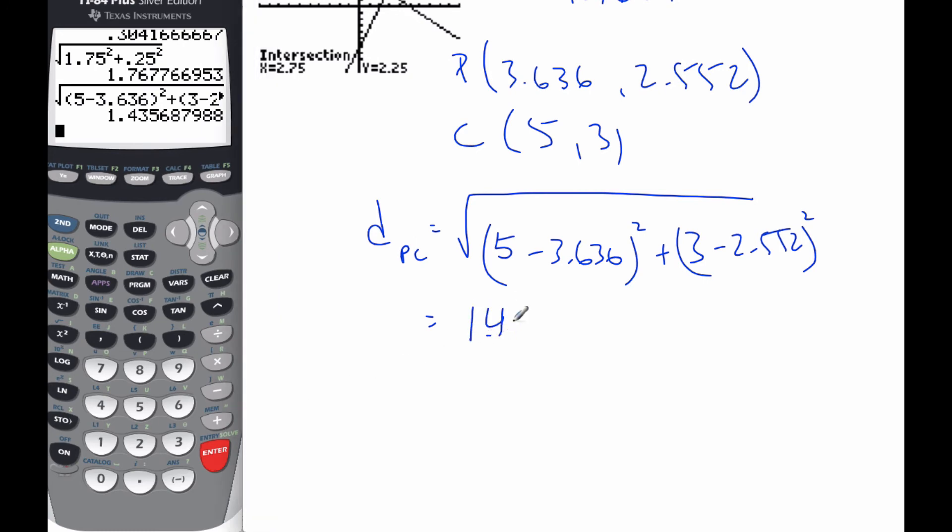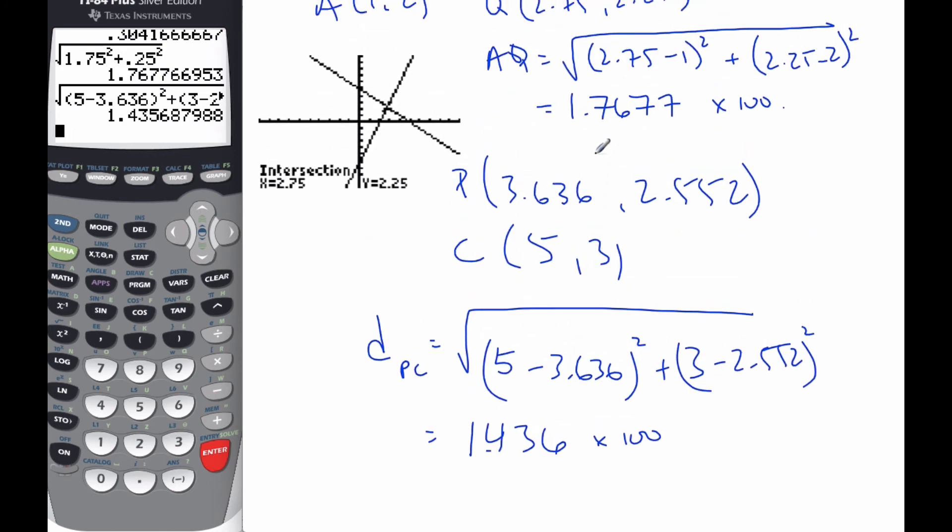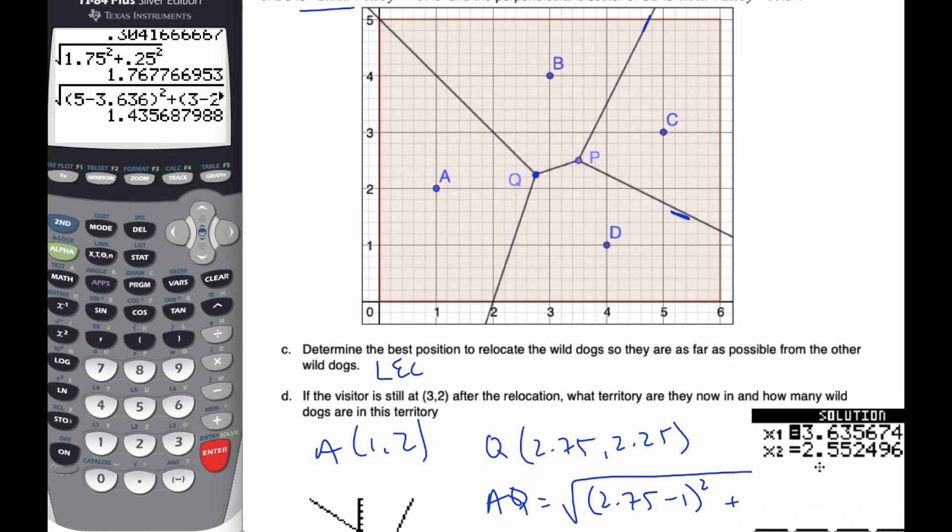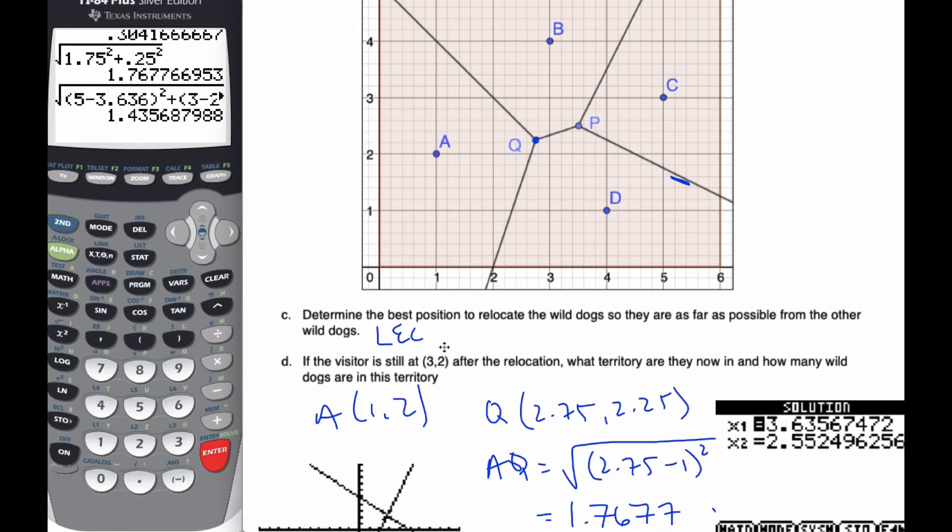My radius here is 1.436 times 100. And so it is clear that AQ, this is the larger circle. And so this is going to be the location of my new site for my wild dogs. The best position is going to be at point Q, as it is the center of the largest empty circle.